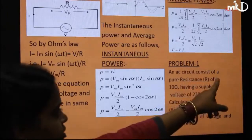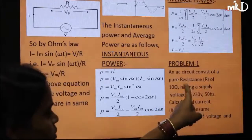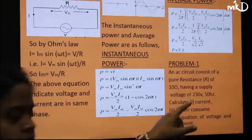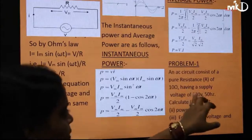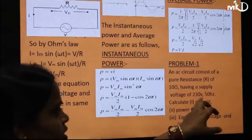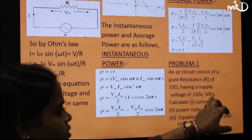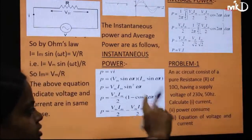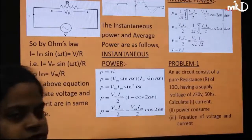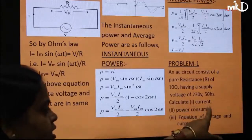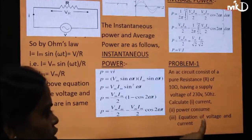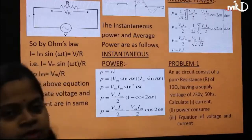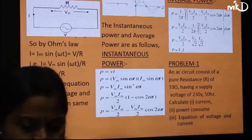In this circuit, a pure resistance of 10 Ω is given with a supply voltage of 230 V and frequency 50 Hz. Voltage, resistance, and frequency are given. We need to calculate: current, power consumed, and the equations of voltage and current.